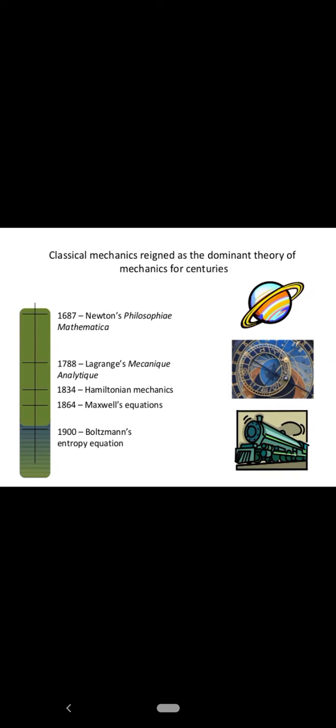These Newton's laws were given in a book which Newton published whose name was Newton's Philosophiae Mathematica, which was published in 1687. Then the major finding in the field of classical mechanics came in 1788 where Lagrange's mechanics came into picture. Then in 1834 Hamilton gave some other methods to describe the equations of motion. Then in 1864 Maxwell gave the four equations and in 1900 Boltzmann entropy equation was discovered. So these were the major breakthroughs in the field of classical mechanics.